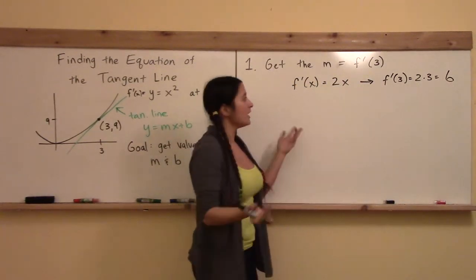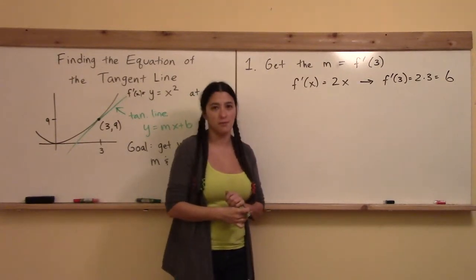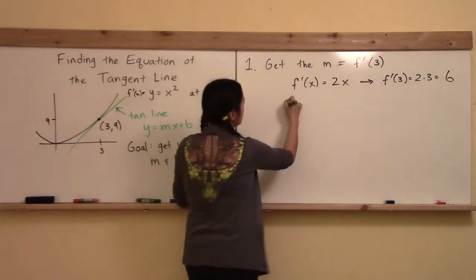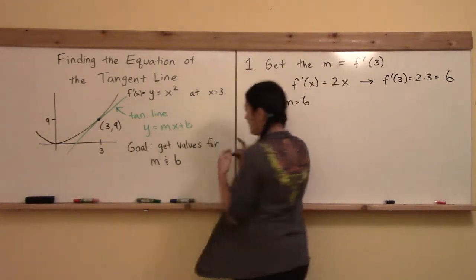Okay, and that's it. Getting the m is easy as long as you've already got some sort of statement for the derivative. So here, step one, we got the conclusion that m is equal to 6. Okay, halfway to our goal.